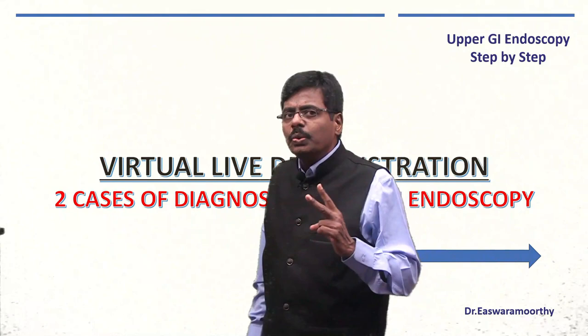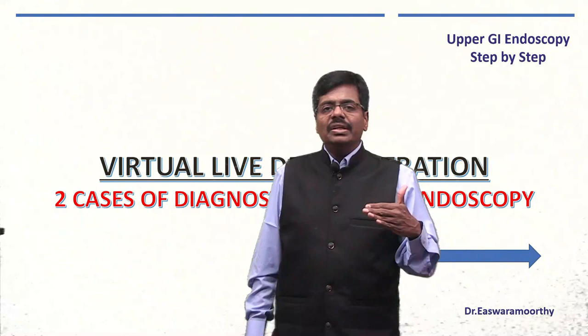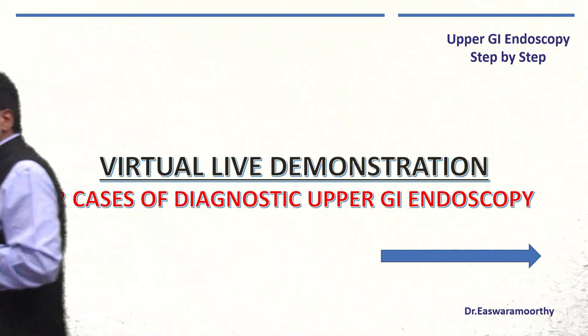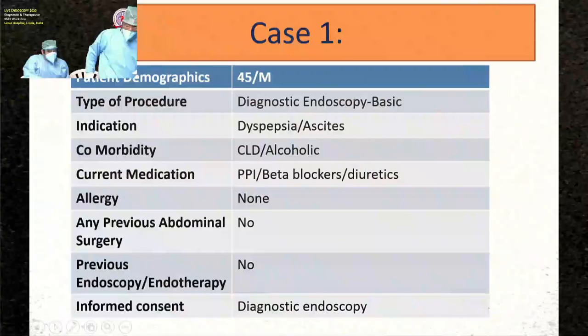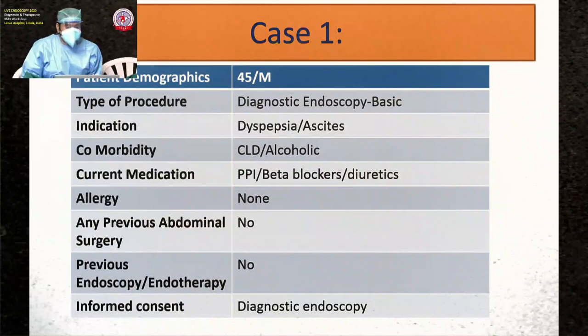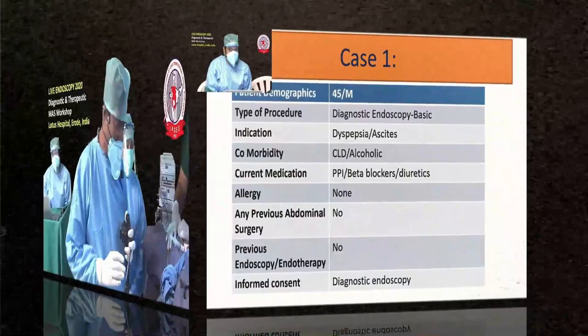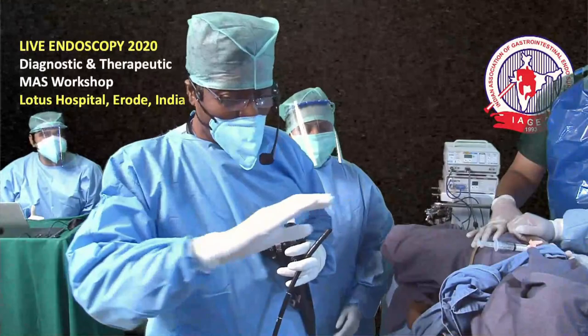Now I will take you through two procedures covering all key steps to navigate the esophagus, stomach, D1, and D2, and come back without missing any lesions. The first case is a 45-year-old male presenting for diagnostic endoscopy. The indication is dyspepsia and ascites; the background is chronic liver disease with chronic alcoholism. He is currently on beta-blockers, proton pump inhibitors, and diuretics, with no allergy and no prior surgeries.